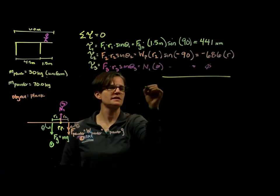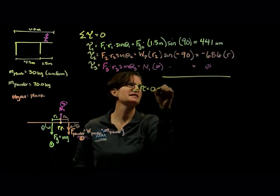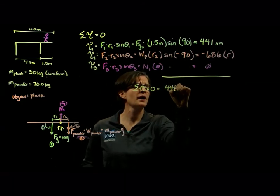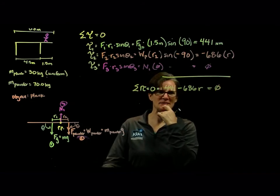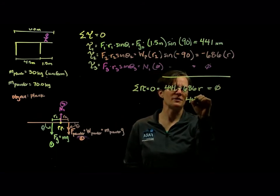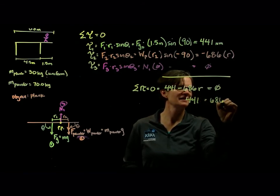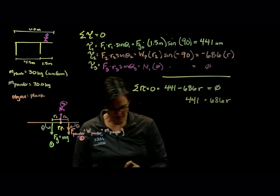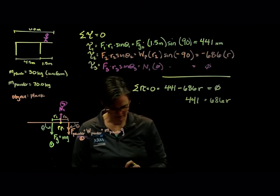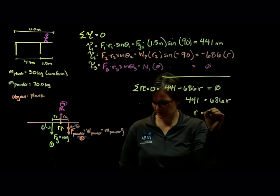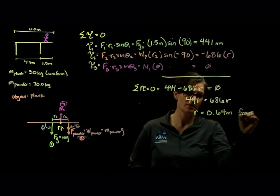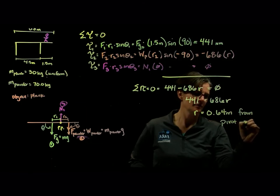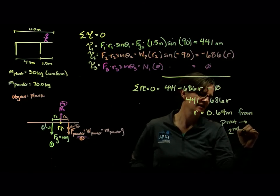We add these torques up. We know that the sum of the torques are equal to 0. We have 441 minus 686 times the radius equals 0. And we can simply solve for the radius. So our radius is 441 divided by 686, we get our radius equal to 0.64 meters from the pivot point, which is the second support.